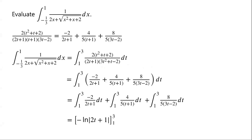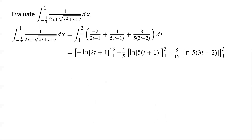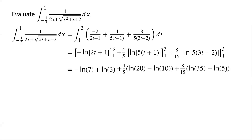The first integral equals negative ln|2t plus 1| from 1 to 3, giving negative ln 7 plus ln 3. The second integral equals (4/5) ln|t plus 1| from 1 to 3, giving (4/5)(ln 20 minus ln 10) equals (4/5) ln 2. The third integral equals (8/15) ln|3t minus 2| from 1 to 3, giving (8/15)(ln 35 minus ln 5) equals (8/15) ln 7. Combining: negative ln 7 plus (8/15) ln 7 equals negative (7/15) ln 7.